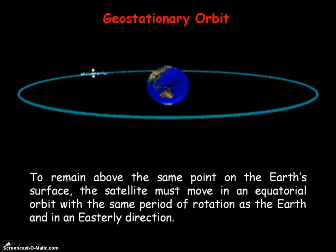Also, the satellite has to have a period of rotation that is same as the period that the Earth rotates about its axis, so that is 24 hours. And the satellite must move in the same direction as the Earth rotates, that is, from west to east.